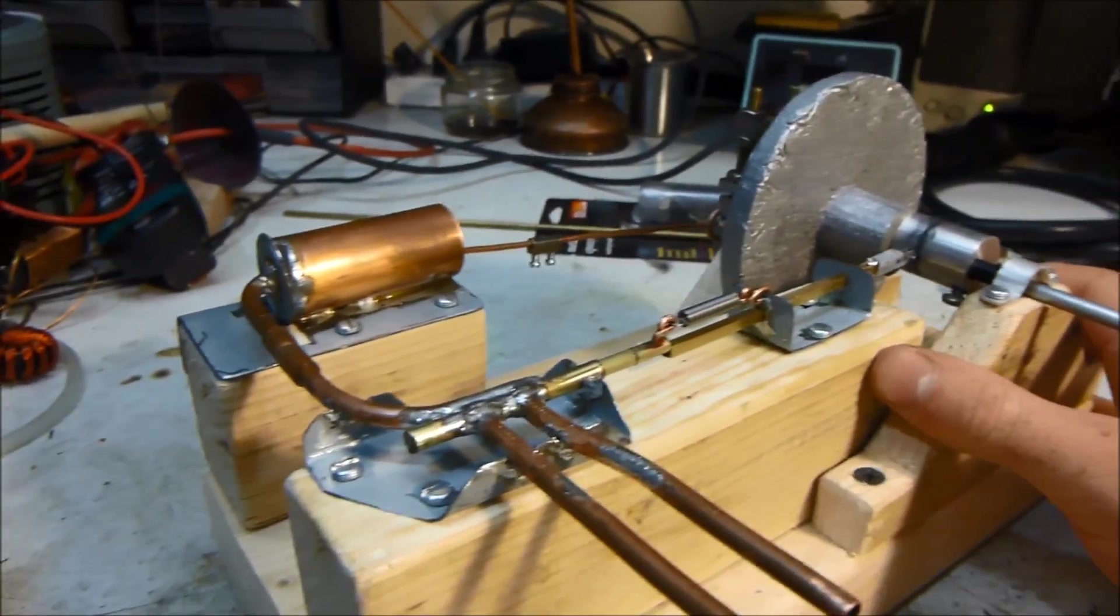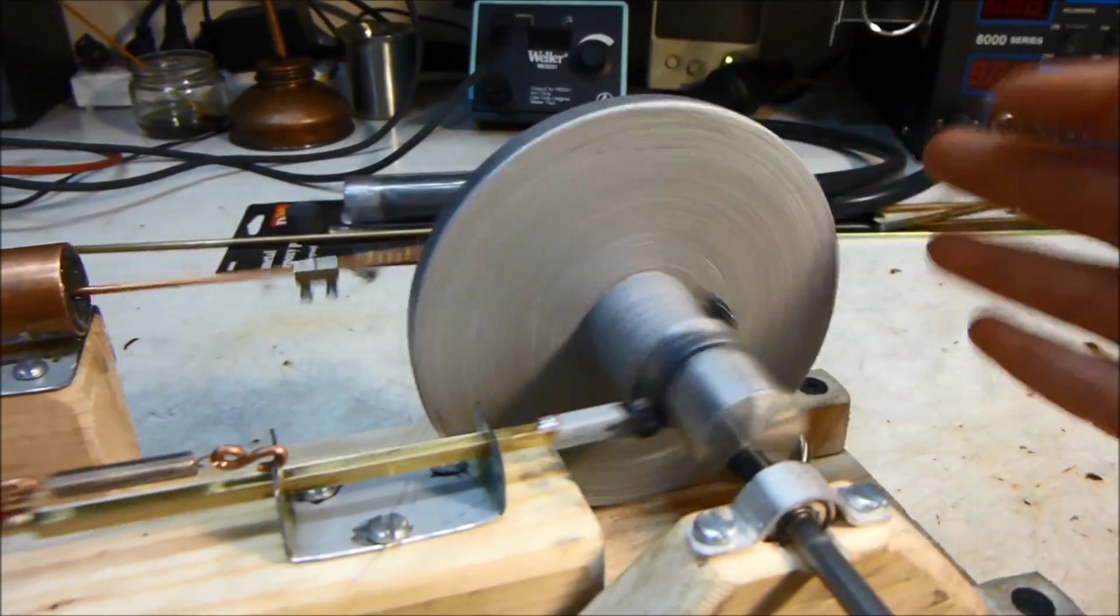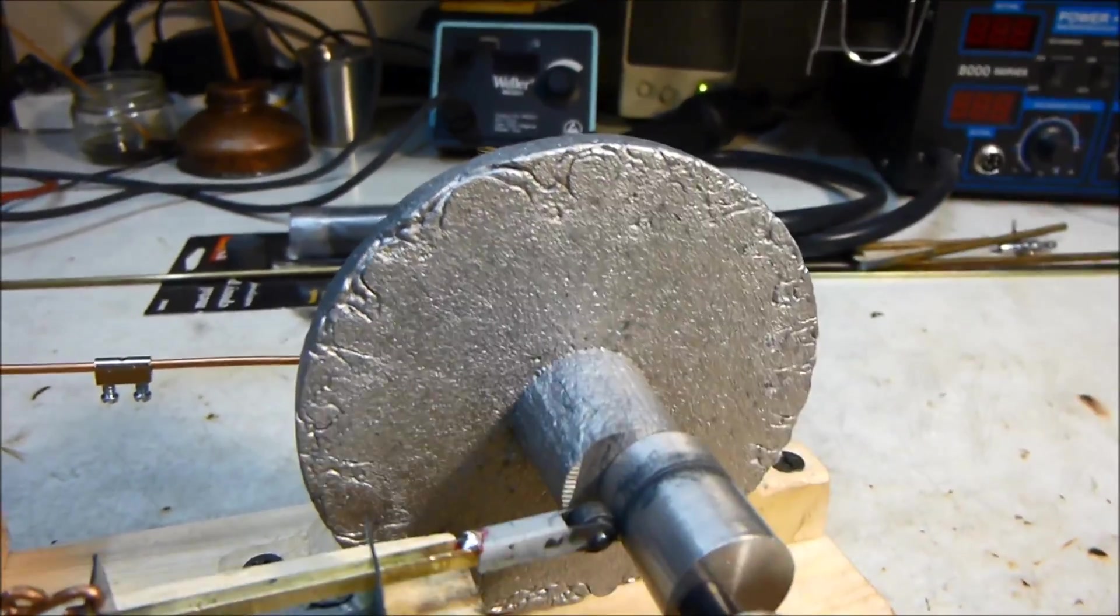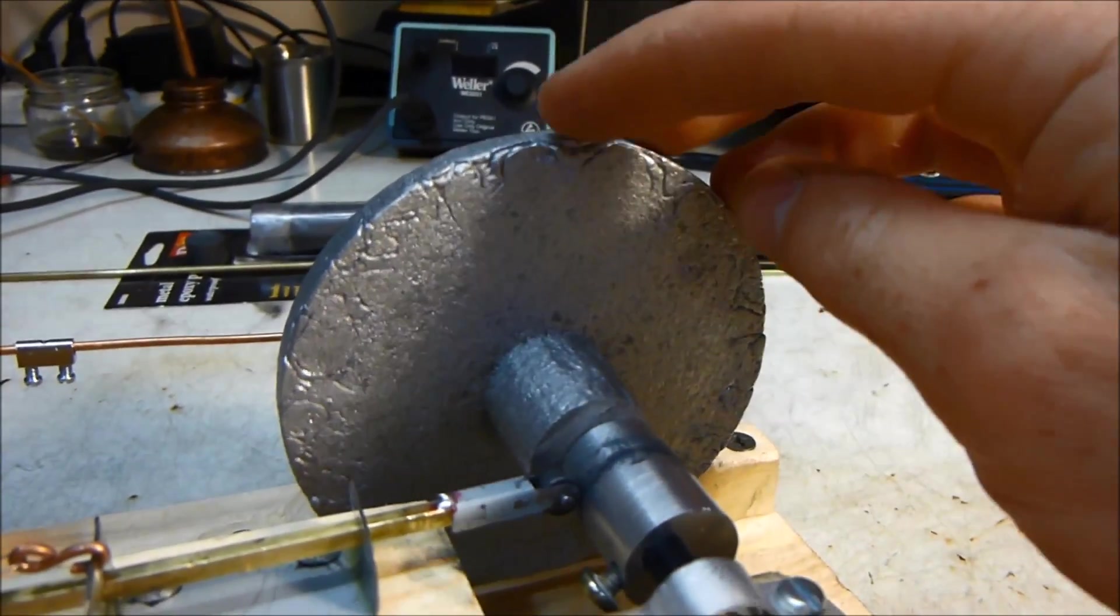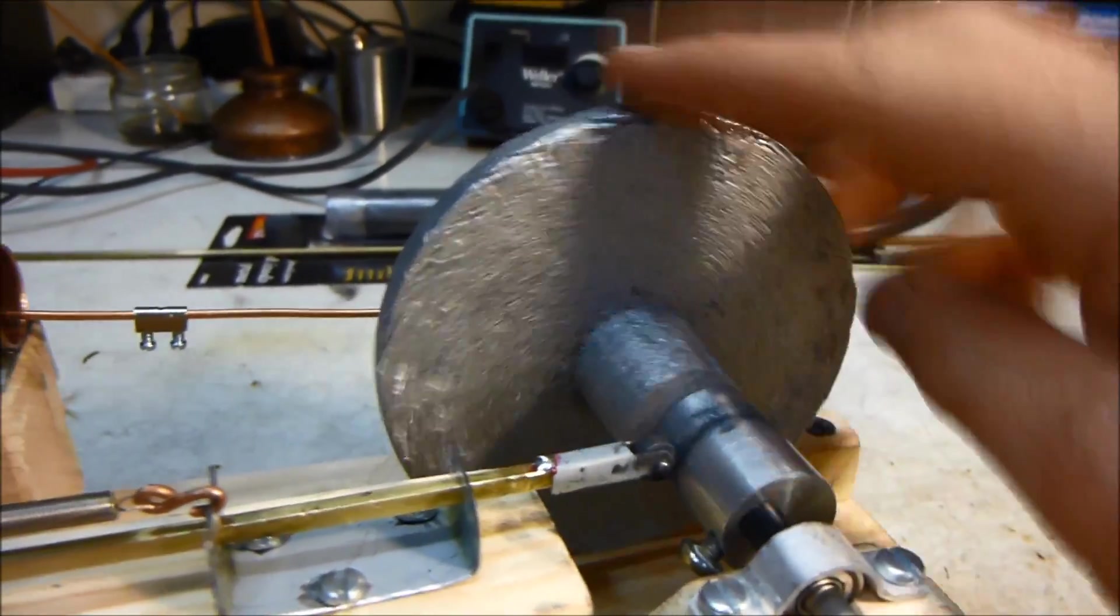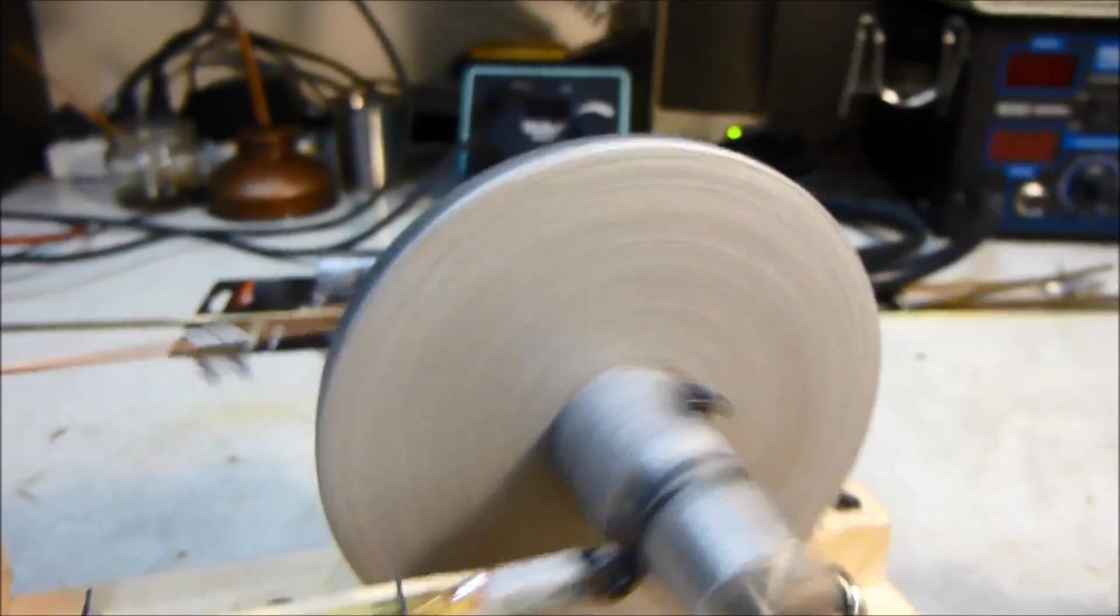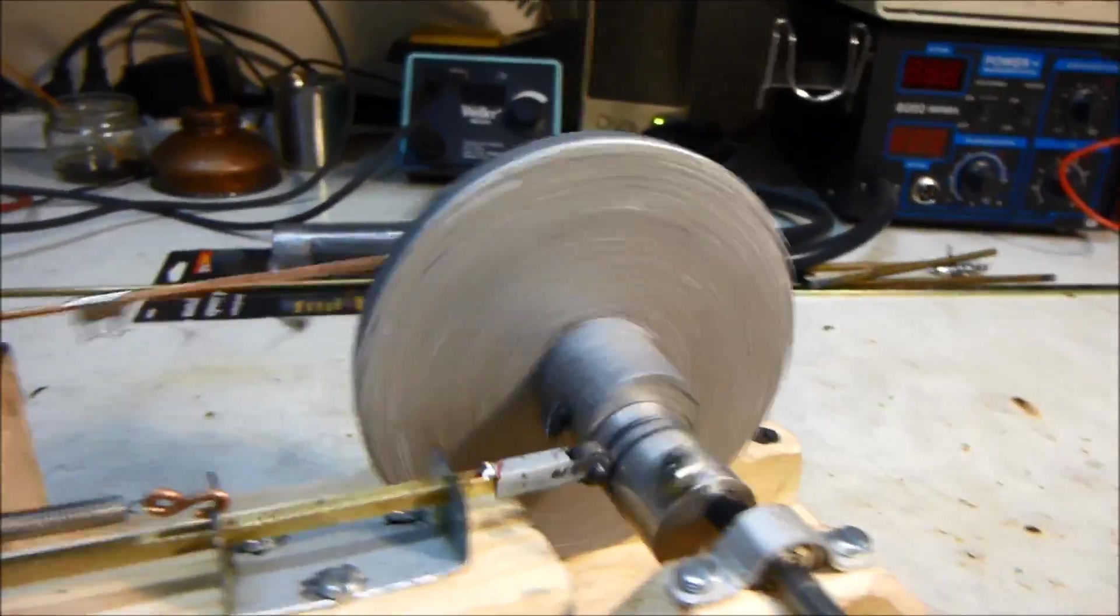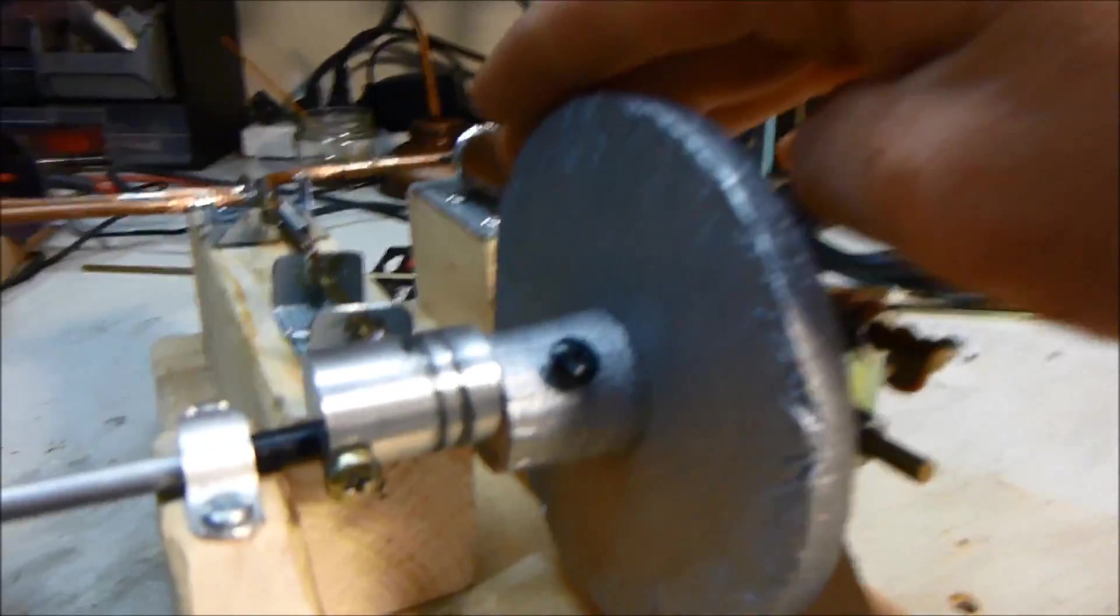So I guess we'll start off with the flywheel. I actually showed the video how to cast that out of aluminum. I used the lost foam method. So you basically take styrofoam in the shape that you want and bury it in sand, and then you pour the molten aluminum in where the foam is, and the foam melts away instantly, and the metal is left in its place. It's not perfect, as you can see, but it works quite well and it's actually very balanced. It doesn't wobble much. I just drilled a hole in the middle and then tapped the little screw there.